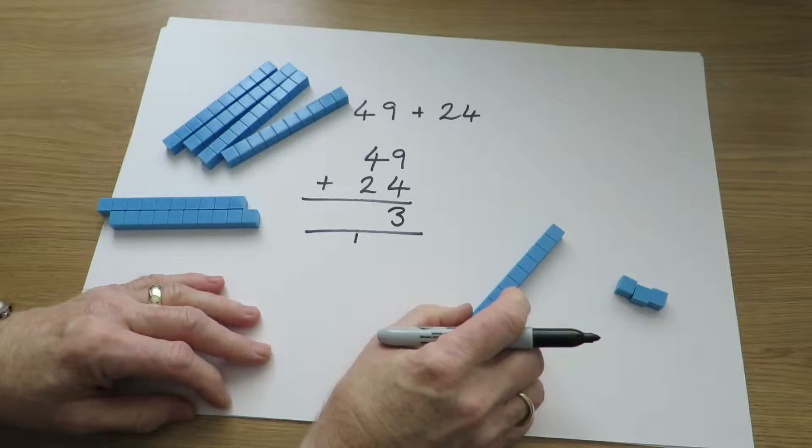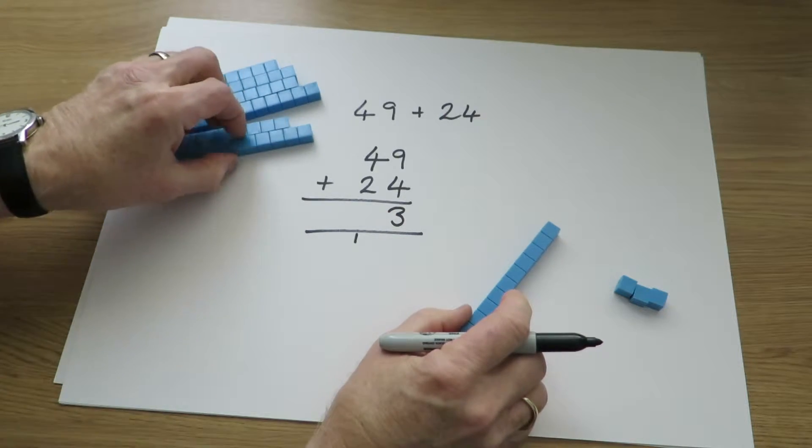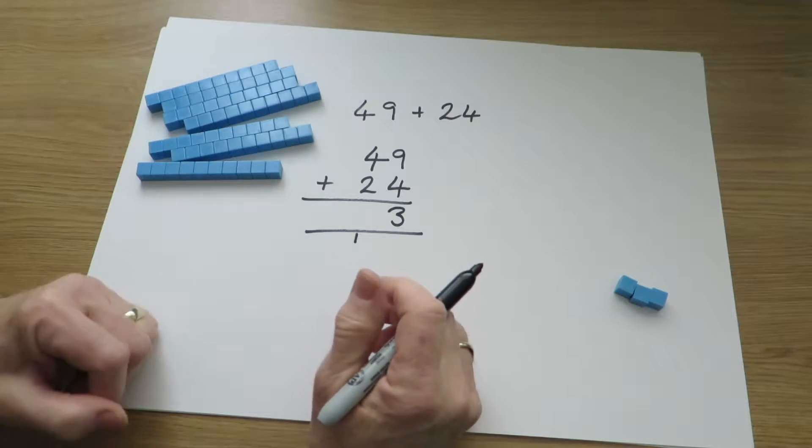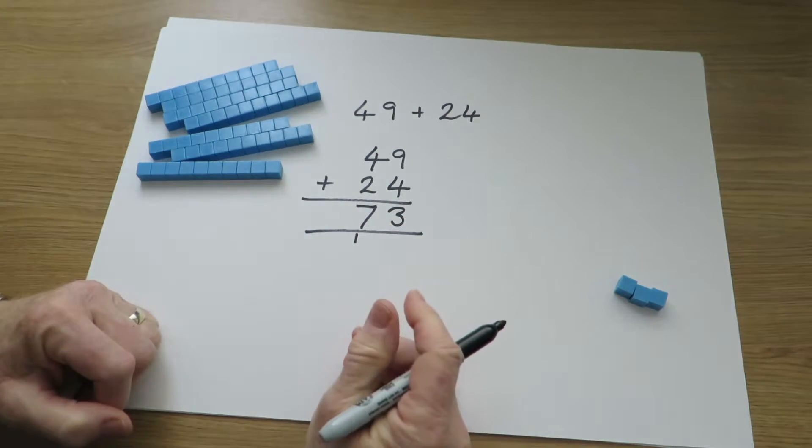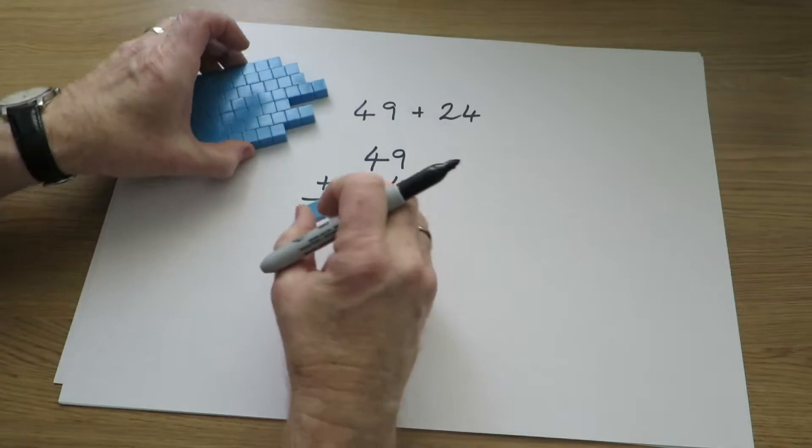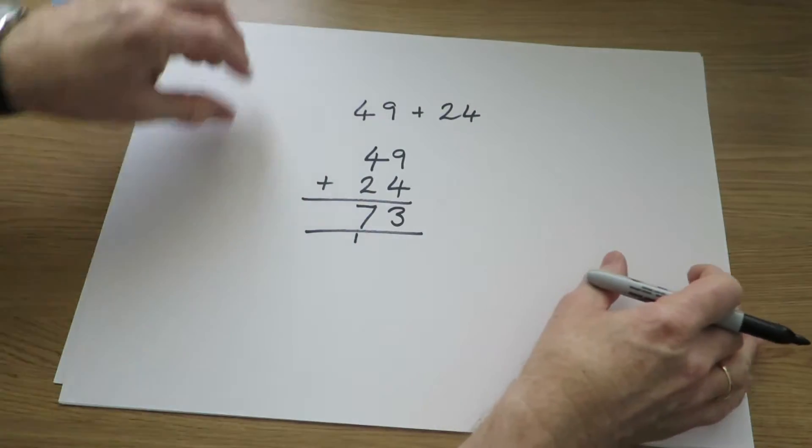Now we add the tens, 4 tens and 2 tens, that's 6. 1 more ten gives us 7 tens, so the answer comes out to 73. And they can extend this work to numbers with up to 3 digits.